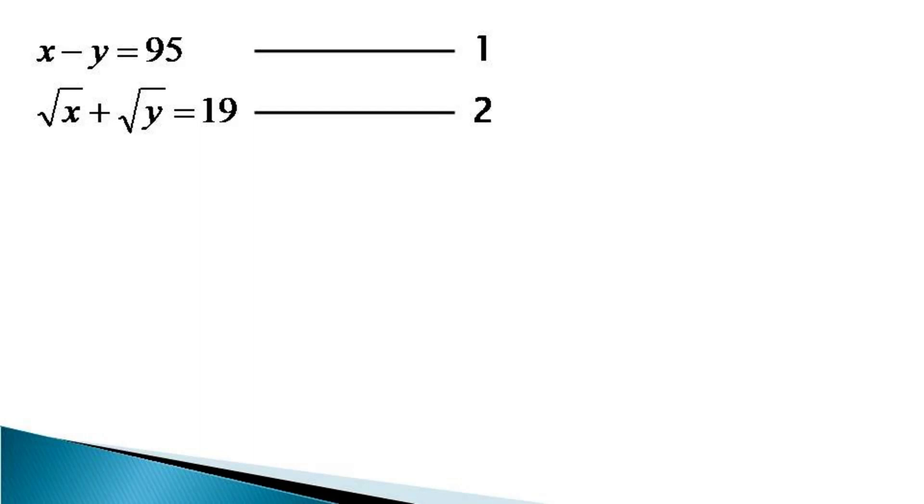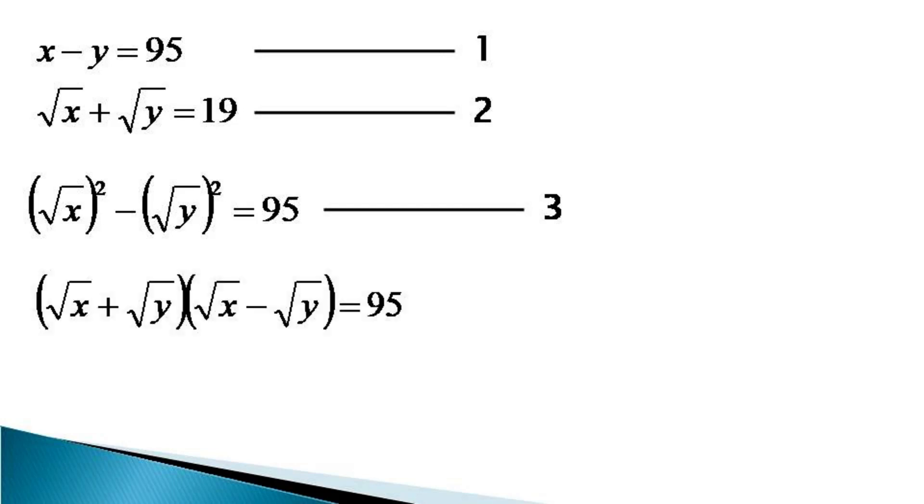Now we consider equation 1 and represent X and Y as root X square and root Y square. So equation 1 becomes root of X square minus root of Y square is equal to 95. We designate it as equation 3 and we factorize the left hand side to get root X plus root Y into root X minus root Y is equal to 95.